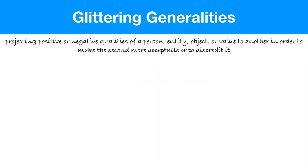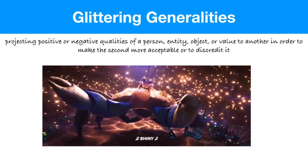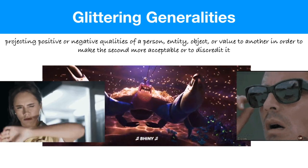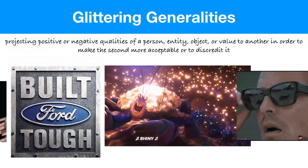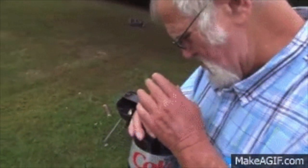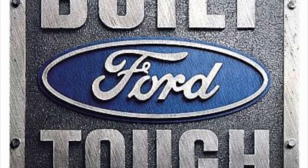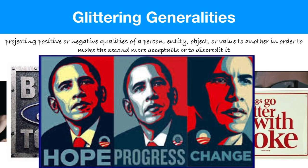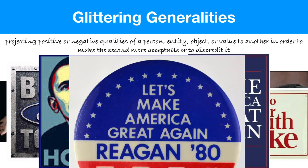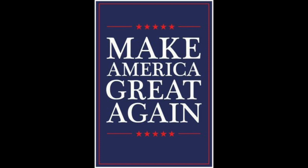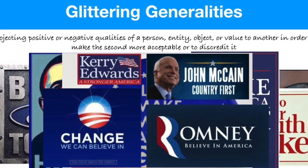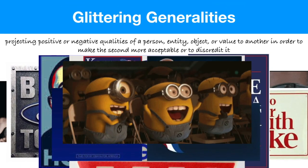The next technique is called glittering generalities — using positive or shiny words to make something sound great without really describing what it's doing. Something like 'Built Ford Tough' or 'Everything goes better with Coke' uses lots of great words but doesn't really tell us anything — how tough is your truck exactly? Politicians do this as well. Obama's campaign used glittering generalities like hope and change. Trump used 'Make America Great Again,' as did Reagan. All politicians really use this technique to promote positive ideas without really describing anything.